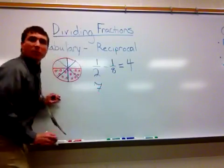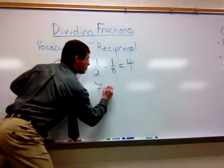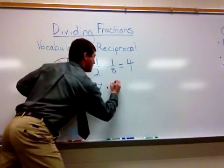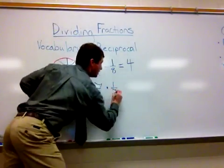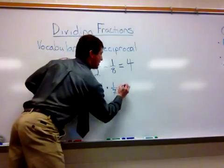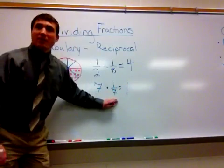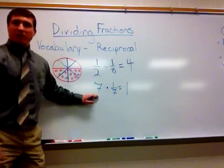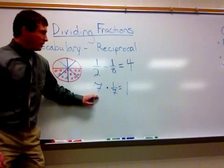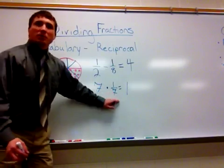For example, if I have the number seven and I multiply that times one-seventh, the answer is actually equal to one. That means that one-seventh is the reciprocal of seven, and vice versa, seven is the reciprocal of one-seventh.